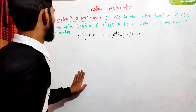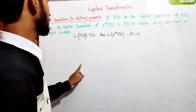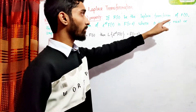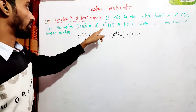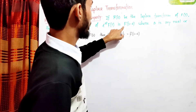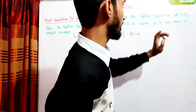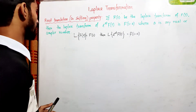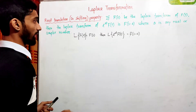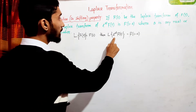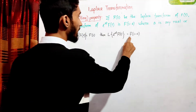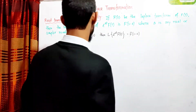Welcome to the first translation property, or first shifting property. If F(s) be the Laplace transform of f(t), then the Laplace transform of e^(At) into f(t) is F(s minus A), where A is a real or complex number. So the Laplace transform of e^(At)·f(t) equals F(s - A).